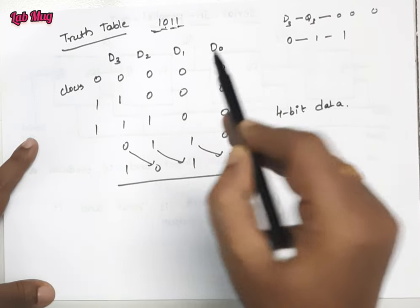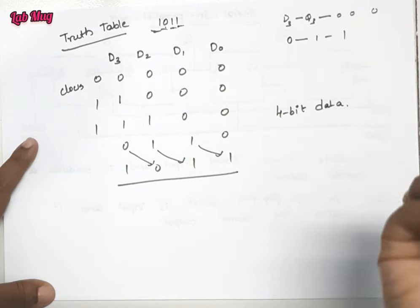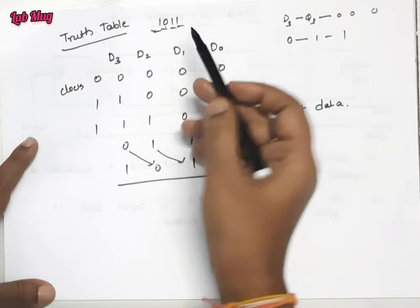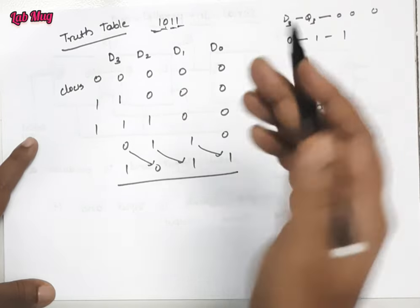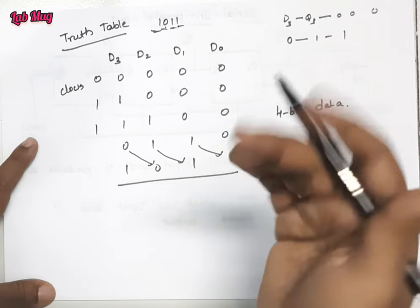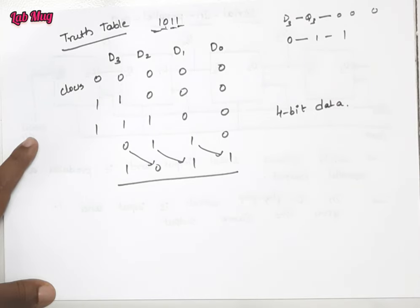Previously we got the output only at the end, but here for storage, the 1011 is there in parallel output. We are getting them individually.